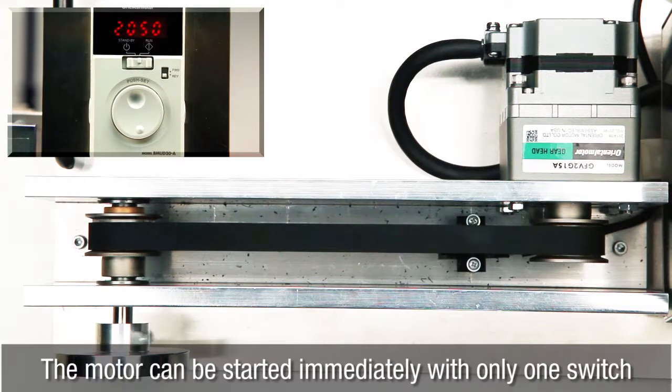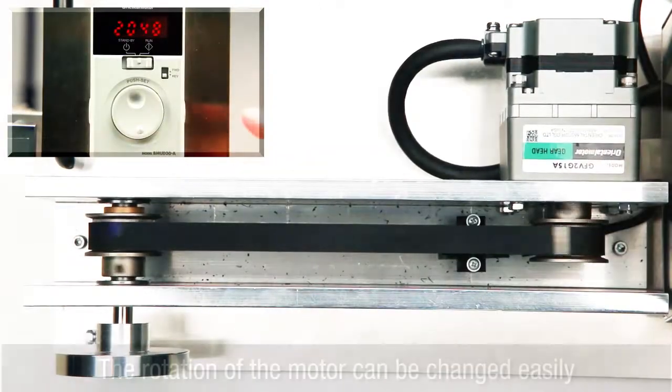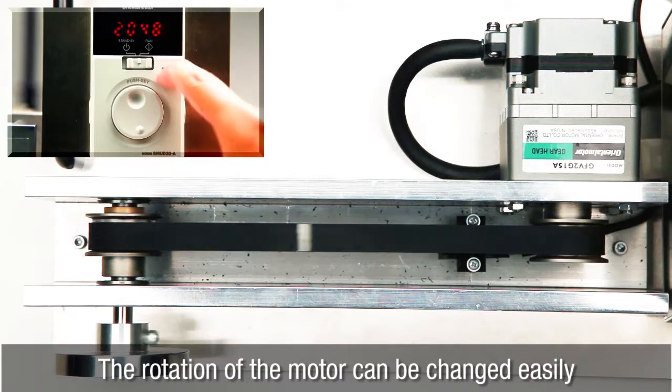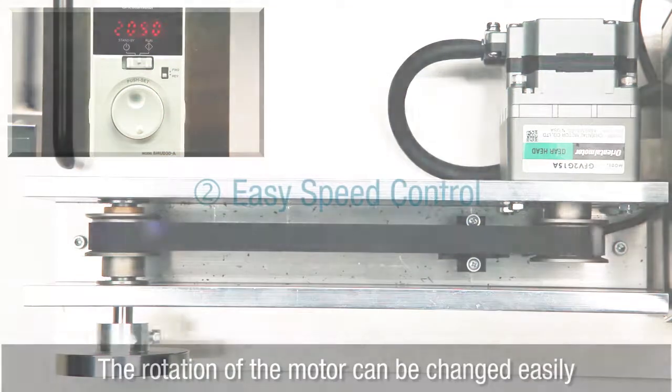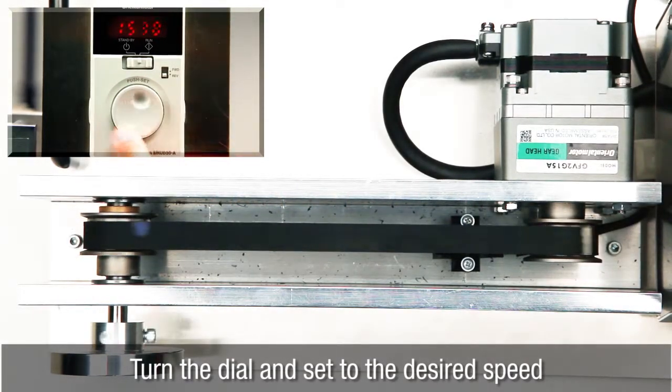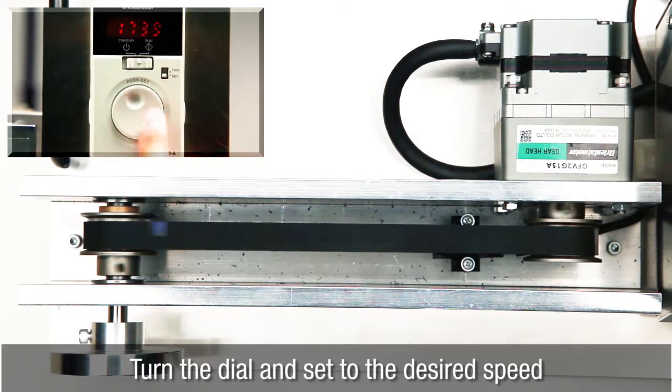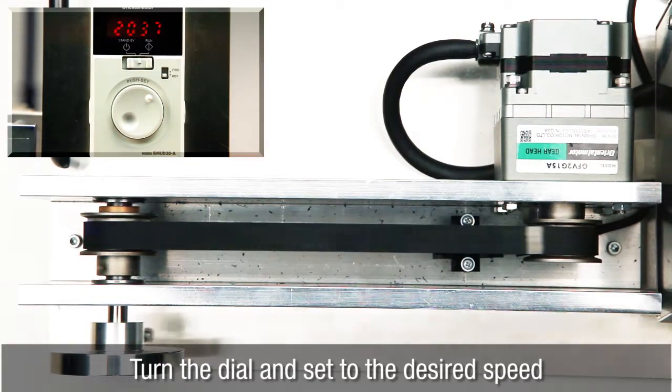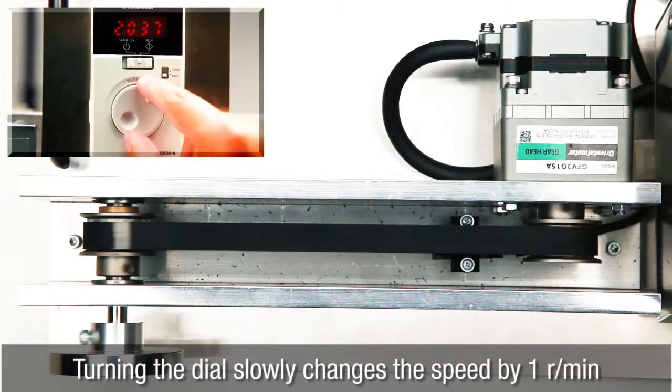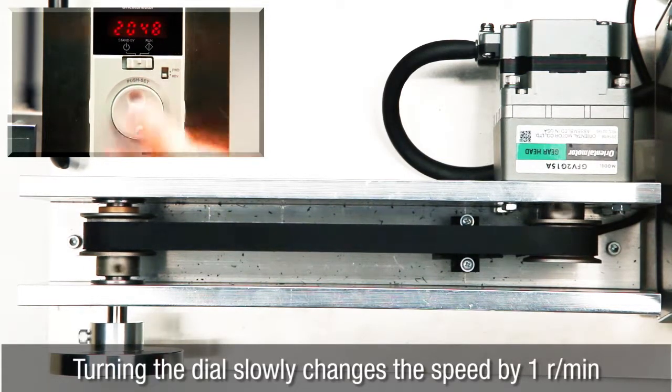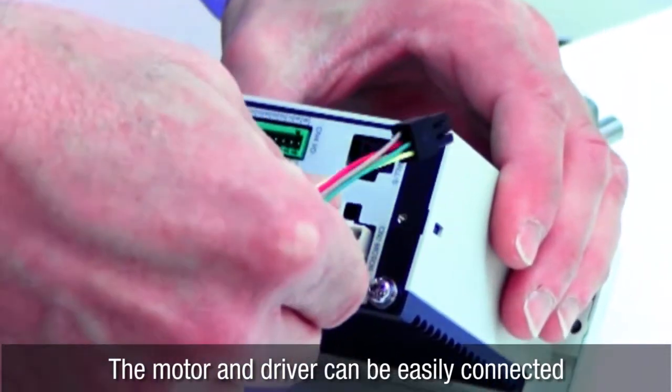The rotation of the motor can be changed easily—turn the dial and set to the desired speed. Turning the dial slowly changes the speed by one revolution per minute. No wiring or soldering required; simply plug in and you're up and running.